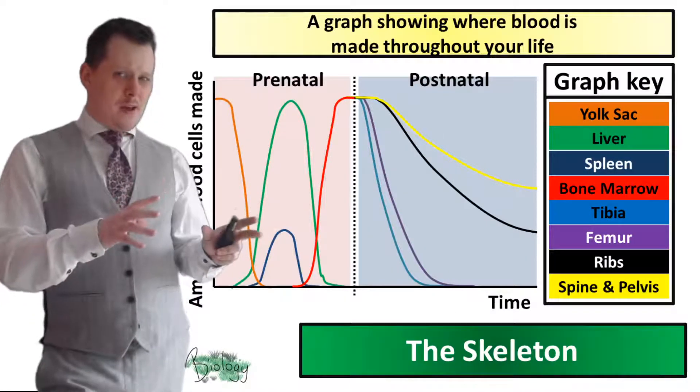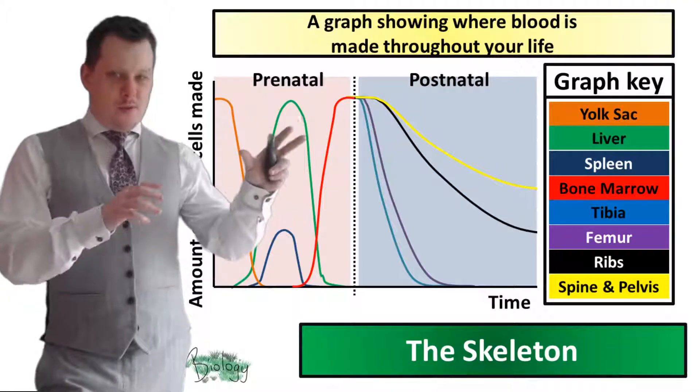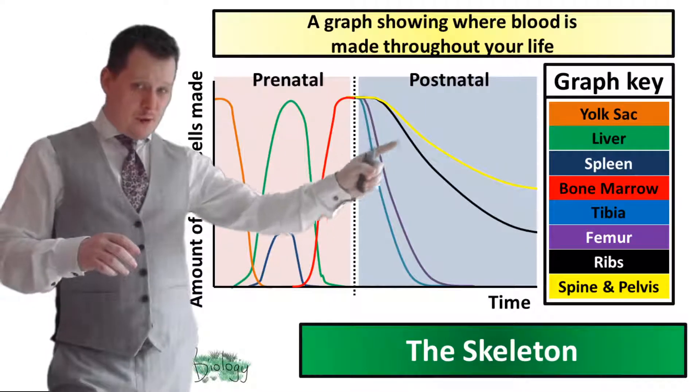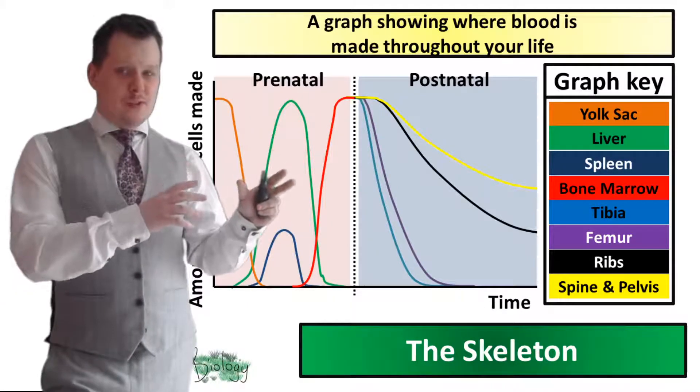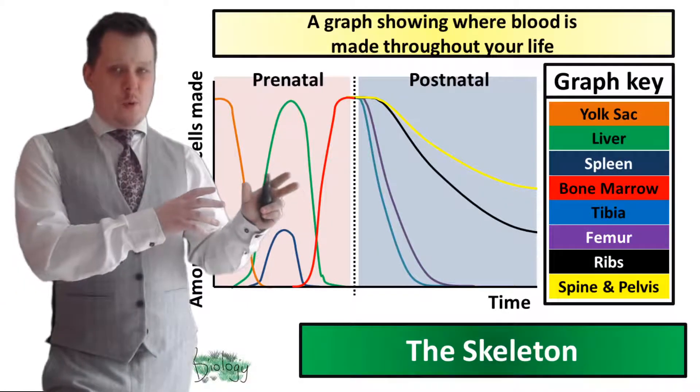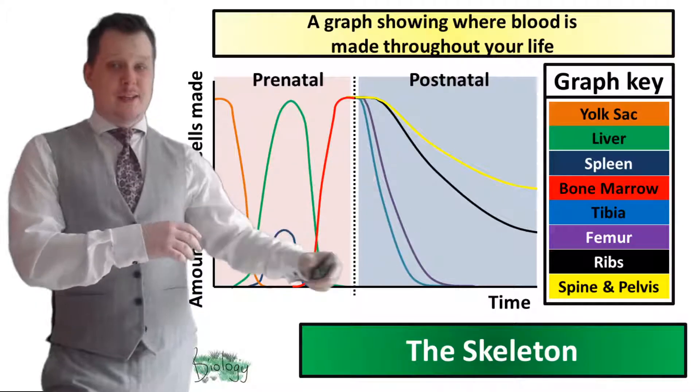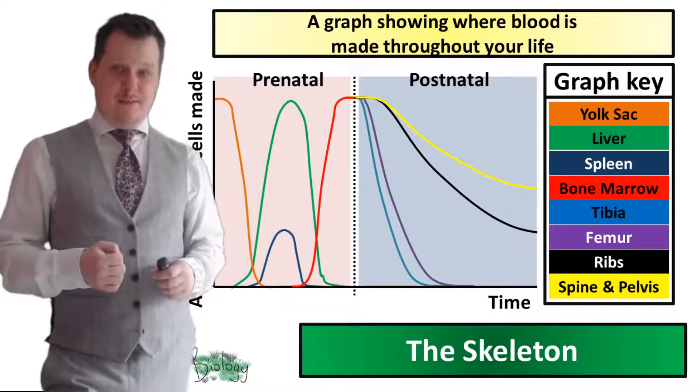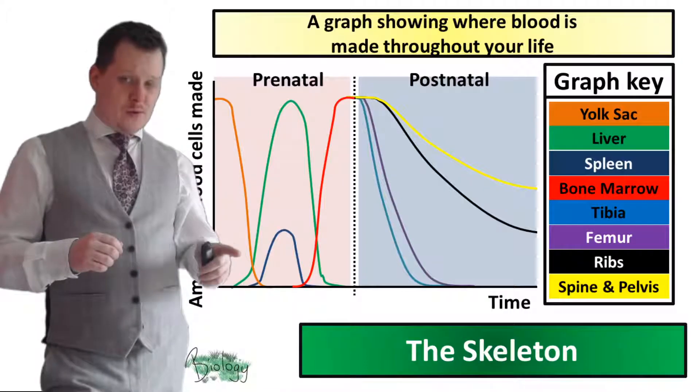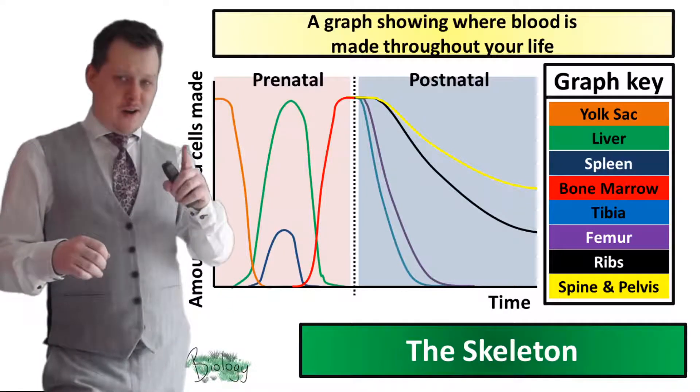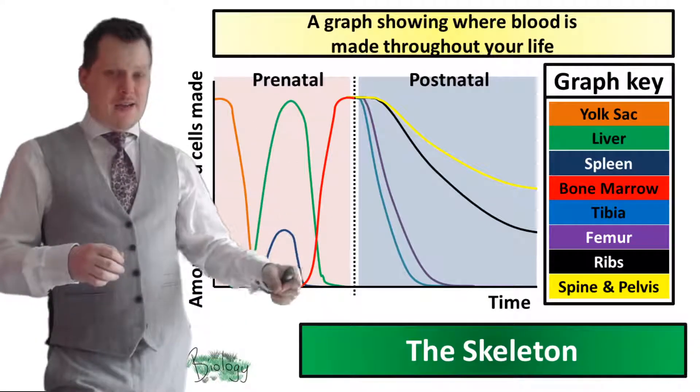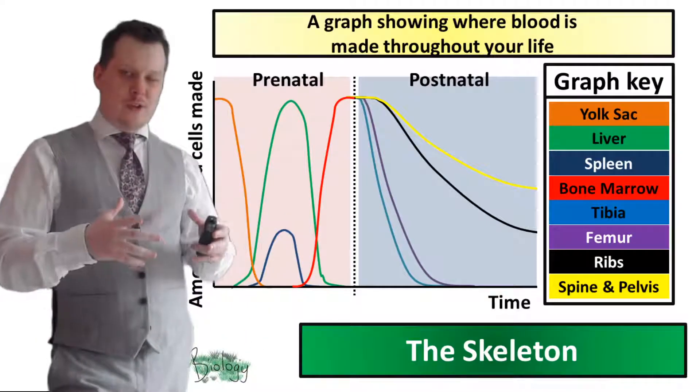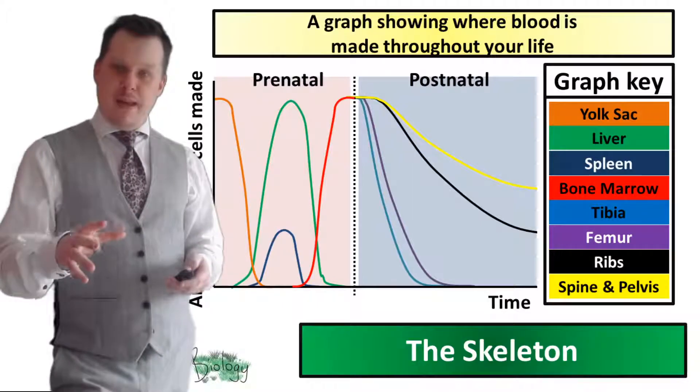We've got a graph here and there's quite a bit going on in this graph. We've got the prenatal section and the postnatal section. This prenatal section is how the red blood cells are made before you are born. And this postnatal is after the baby has been delivered. The different coloured lines represent where those blood cells are being made. So this dark orange line, that's the yolk sac. This green line is the liver. And using the key on the right you can see all the other organs which are responsible for making blood cells.